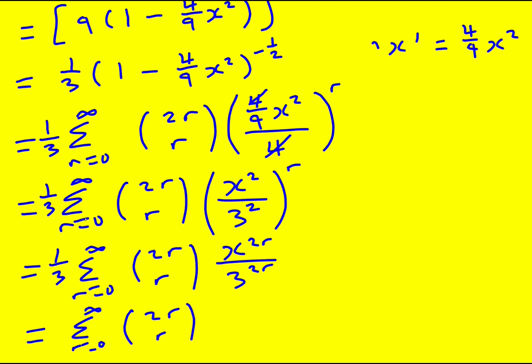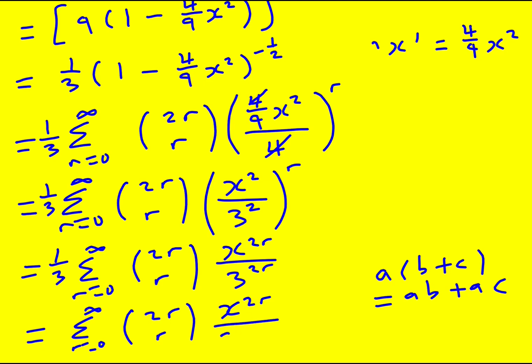I missed a third — I should have carried that through. Including the third, I get the sum from r equals 0 to infinity of 2r-choose-r times x to the 2r over 3 to the 2r. Now, to write it in the required form, I need to bring that third into the summation. It's absolutely fine to bring constants out of or into summations — instead of summing everything and then multiplying by a third, I can just multiply each term by a third and sum it. That gives 3 to the 2r plus 1 on the bottom, so q equals 2r plus 1.